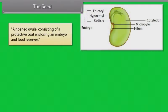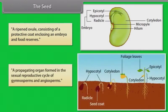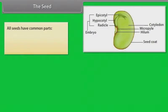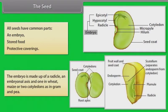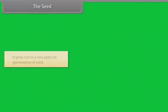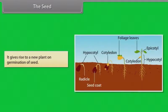A seed is a ripened ovule consisting of a protective coat enclosing an embryo and food reserves. It is a propagating organ formed in the sexual reproductive cycle of gymnosperms and angiosperms. The embryo is made up of a radicle, an embryonal axis, and one cotyledon (as in wheat and maize) or two cotyledons (as in gram and pea). It gives rise to a new plant on germination of the seed.